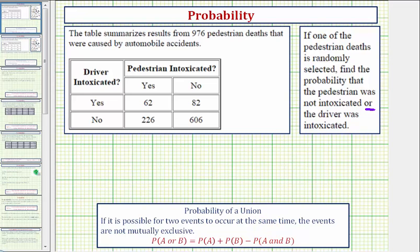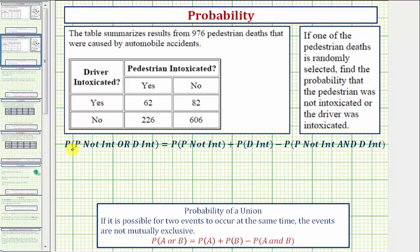To set this up, we'll say the probability the pedestrian was not intoxicated or the driver was intoxicated equals the probability the pedestrian was not intoxicated plus the probability the driver was intoxicated minus the probability the pedestrian was not intoxicated and the driver was intoxicated.